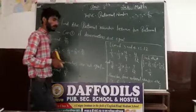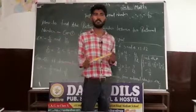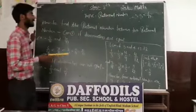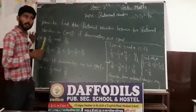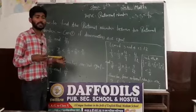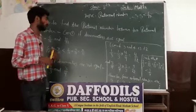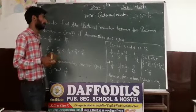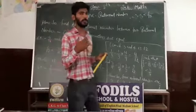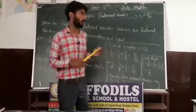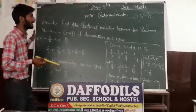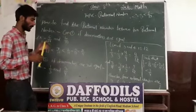Today's lesson — before it, I have already told you about addition, subtraction, multiplication, and division. We have discussed all those topics. I think this is our last chapter. Today we will learn how to find the rational number between two given rational numbers. Two rational numbers are given — how do we find the rational number between them? It's a very interesting topic.